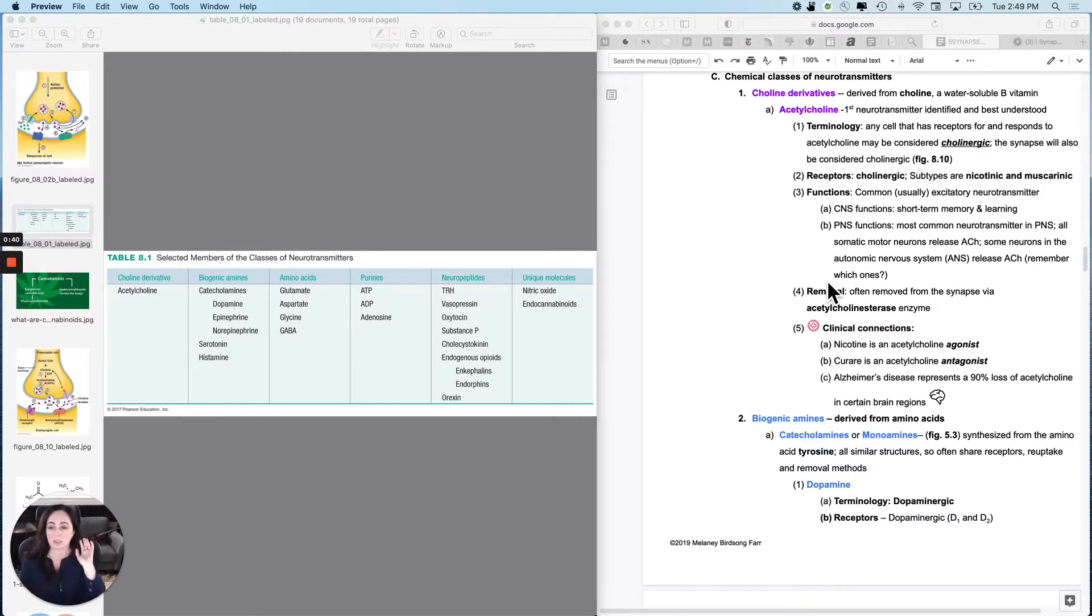So, let's talk about the categories first. The categories are in table 8.1. The first is the choline derivatives. We're only going to learn one of those, and that's acetylcholine. And we've already been talking about acetylcholine because it's active in the somatic nervous system. It's also active in the autonomic nervous system.